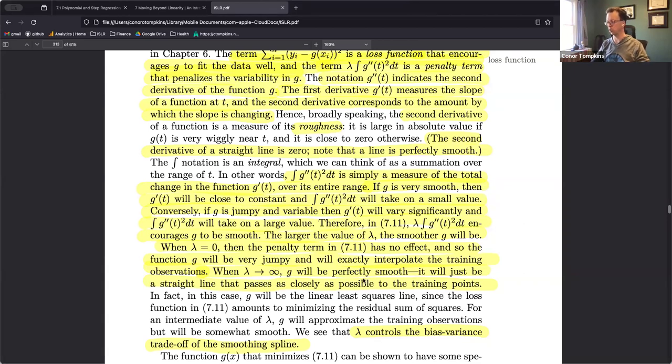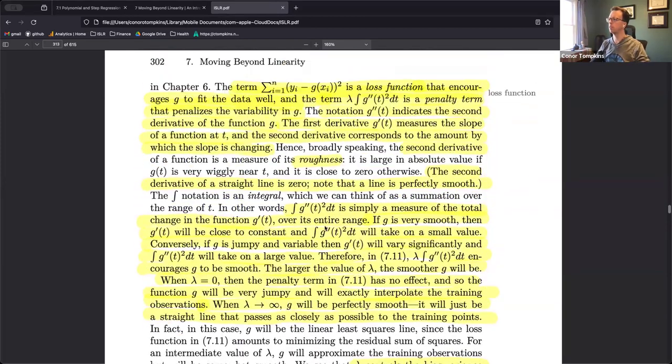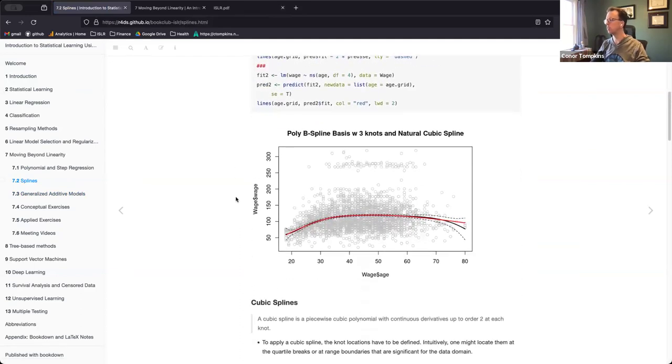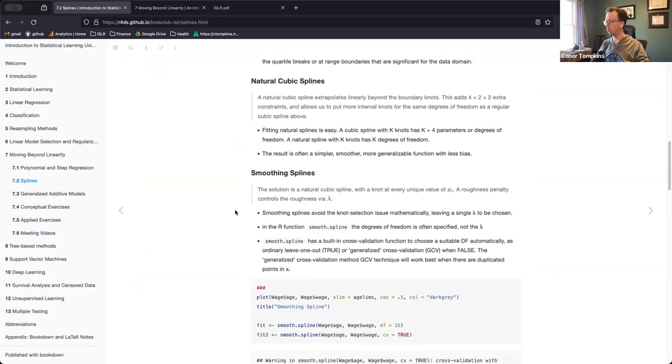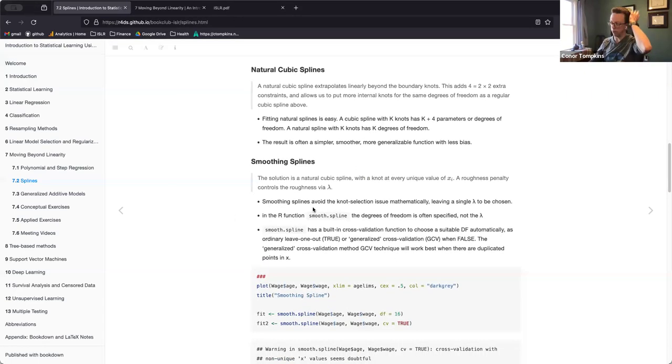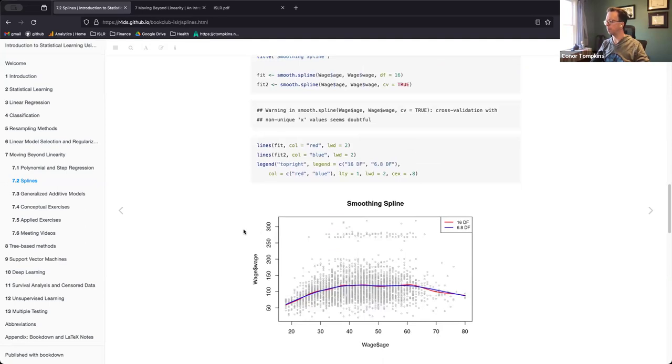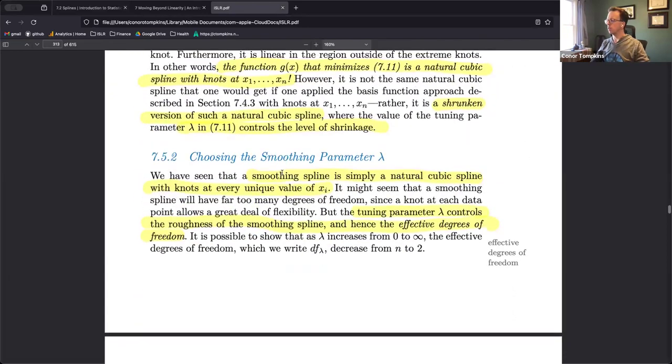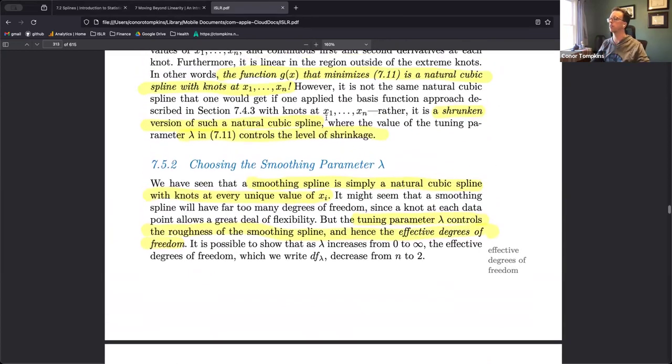If the tuning parameter is zero, it'll draw a line through every single data point, and when it approaches infinity it'll be a straight line. So that's another way to control the bias-variance trade-off. In practical programming, you're actually specifying the degrees of freedom, not this term. I guess that's just more straightforward to do.